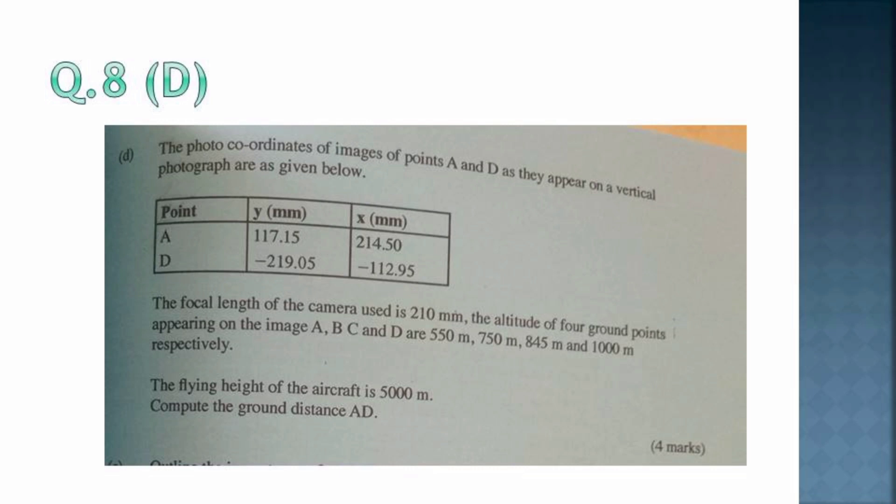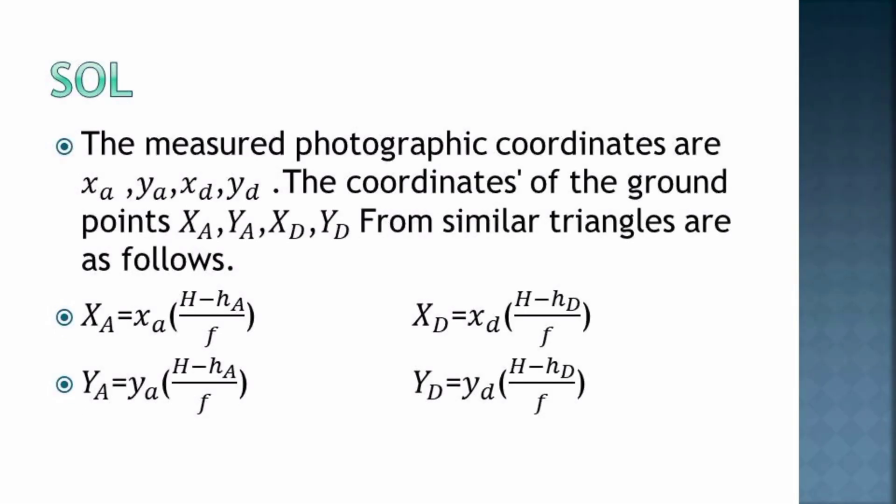Given that the flying height of the aircraft is 5000 meters, compute the ground distance of AD, a total of four marks. Let's go directly to the solution. We have the measured photographic coordinates, those are the coordinates found on the photos. The coordinates of the ground points we represent using capitals to know the difference between the photographic coordinates and the coordinates of the ground.